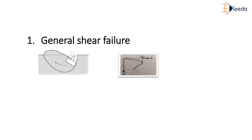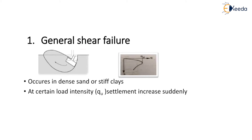The first type of failure is general shear failure. In the first figure we can see a general shear failure of a strip footing. The second figure indicates the load settlement curve for the general shear failure. This type of failure occurs in dense sand or stiff clays. At a certain load intensity QU, the settlement increases suddenly. In the load settlement curve we can see that once the load reaches the value of QU, there is a sudden increase in settlement.